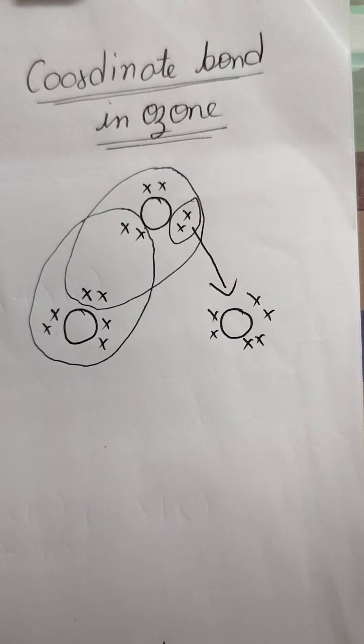There is a sharing. What is in covalent bond? There is mutual sharing of electrons. Both the atoms which are getting combined, they will share equal number of electrons with each other. That is the covalent bond.